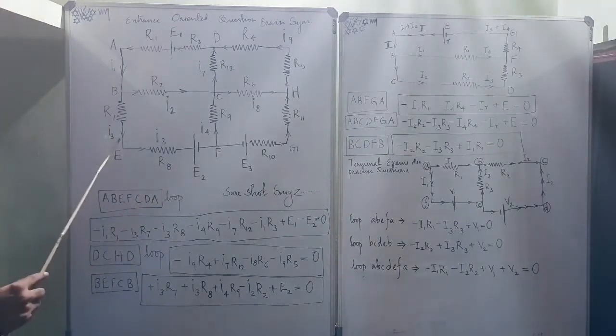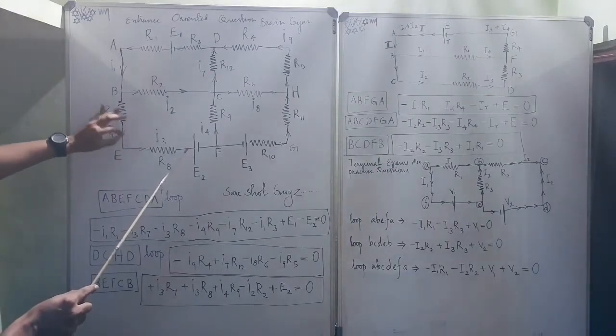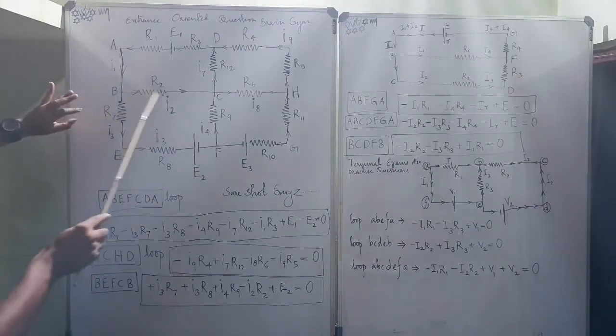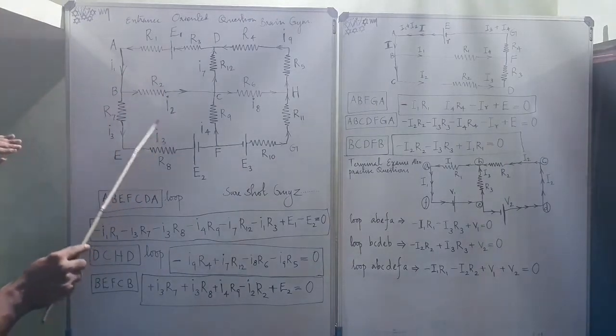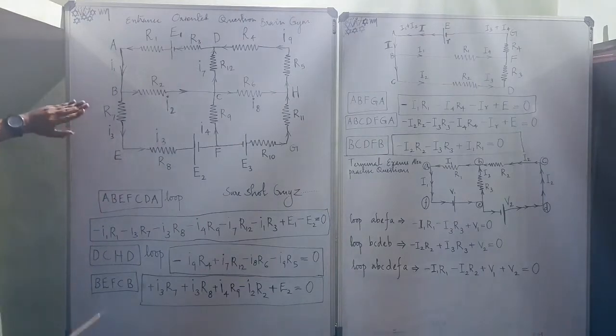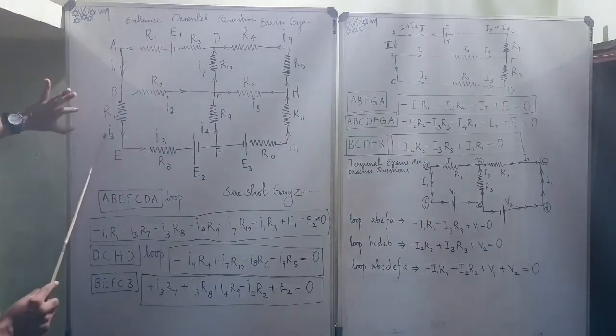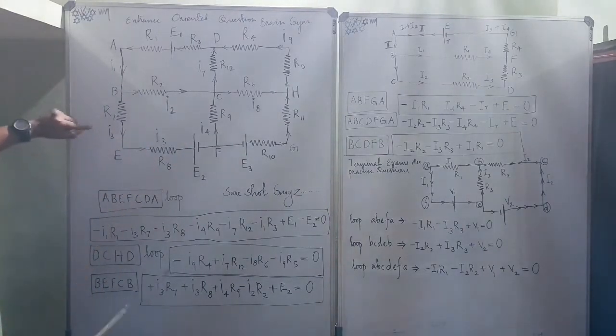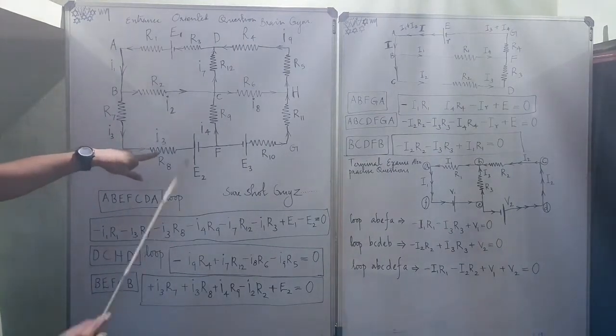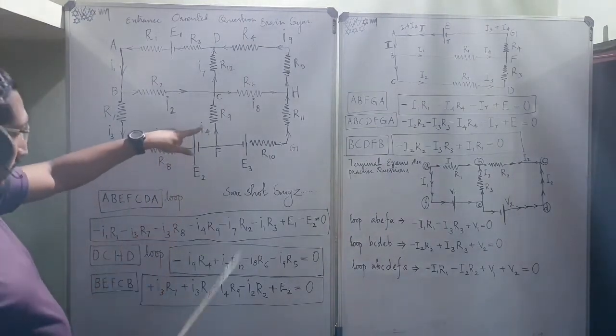Then the current is against this flow. When the current is emanating from the positive, it should be taken as a negative. But here, it is towards this. So, the starting from here, plus I3. It is towards this positive. So, plus I3*R7. Same direction, plus I3*R8.